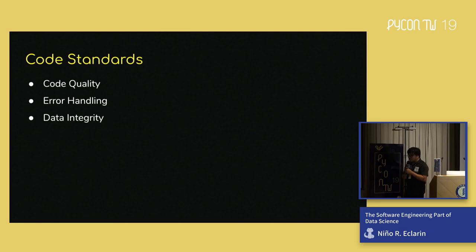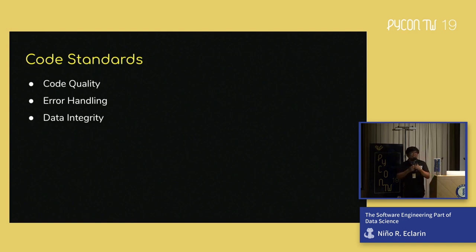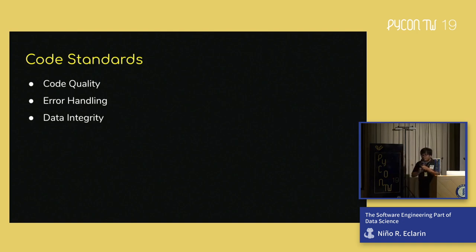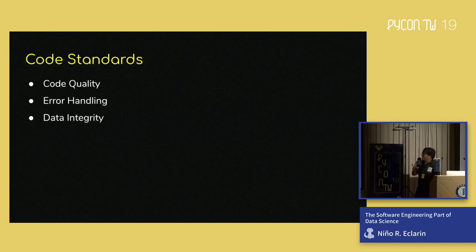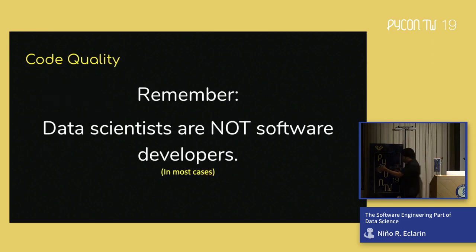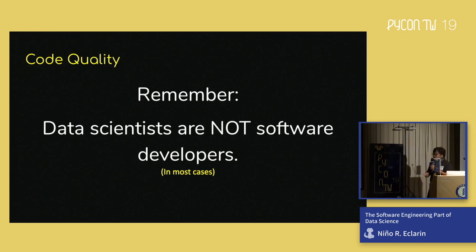For coding standards, I'm going to show several code examples. For those new to Python, I'll upload a simpler implementation to my GitHub after this presentation. Coding standards: first, code quality — how do we ensure it? How do we handle errors? Error handling is really important; if you don't handle errors properly, your application is going to suffer. We're also going to discuss data integrity. I cannot emphasize this: data scientists are not software developers. Do not blame them if their code is bad. It's your job as software engineers to write good code.